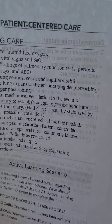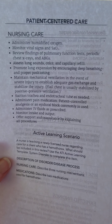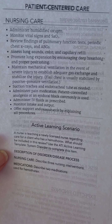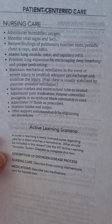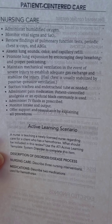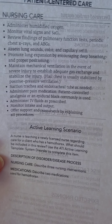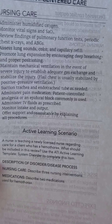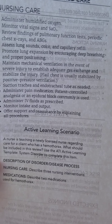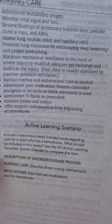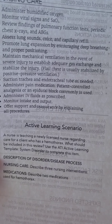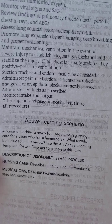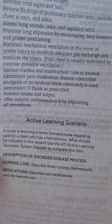For patient-centered care, nursing care would be to administer humidified oxygen, monitor vital signs and SaO2, review findings of pulmonary function tests, periodic chest x-rays and ABGs, assess lung sounds, color, and capillary refill. Promote lung expansion by encouraging deep breathing and proper positioning. Maintain mechanical ventilation in the event of severe injury to establish adequate gas exchange and stabilize the injury. Flail chest is usually stabilized by positive pressure ventilation.